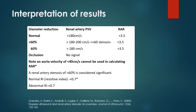Interpretation of results. A normal renal artery velocity is less than 180 centimeters per second, with a renal aortic ratio of less than 3.5. A less than 60% renal artery stenosis shows velocity greater than 180 to 200 centimeters per second, with the renal aortic ratio still below 3.5. As you approach 60% or greater stenosis, your velocity is definitely greater than 180 — could be 200 or 300 — and your renal aortic ratio is also greater than 3.5.